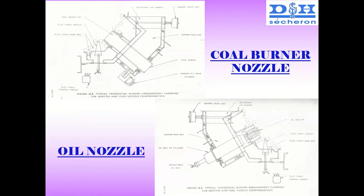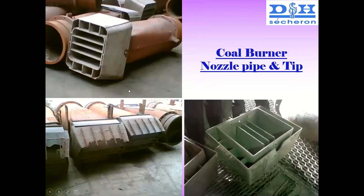This is how it should be looking. This is what we call the whole nozzle pipe — what you can see in red — and the front is the coal nozzle tip. Generally, pulverized coal from the bowl mill is sent inside the boiler at a certain speed and velocity for enhancing the burning inside the boiler, so that water gets heated and steam generation takes place.